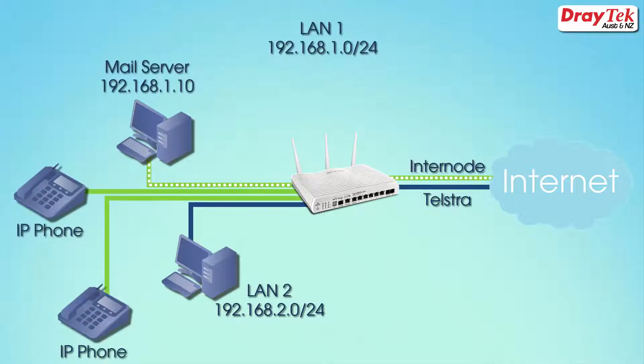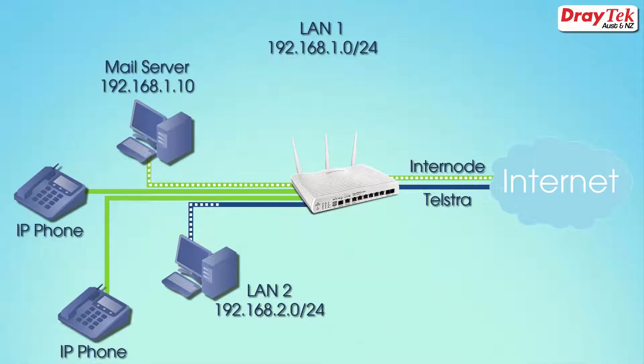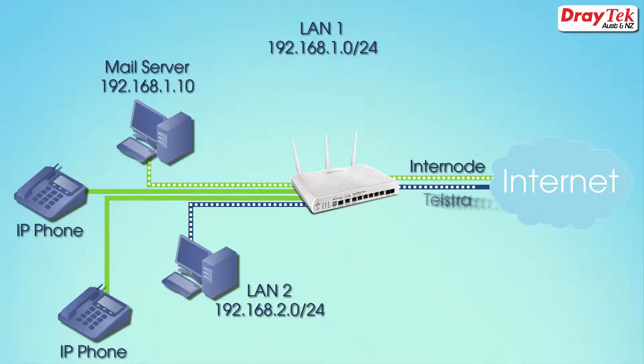Similarly, phone services need to use WAN1. Traffic from other LAN devices on LAN2 can be directed to use WAN2, which is connected to Telstra.